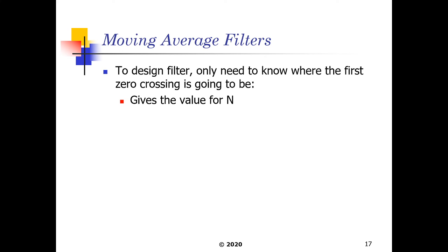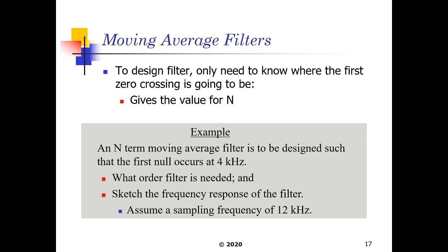To design this filter, all we just need to know is where the first zero crossing is going to be, and this gives us the value for N. So let's watch this example here, where we need to figure out what is the order of the filter that is required, our N term. And as such, we know the full null occurs at 4 kHz. As of such, once we know what the equation is, we can just sketch a generic frequency response, assuming a sampling frequency of 12 kHz.